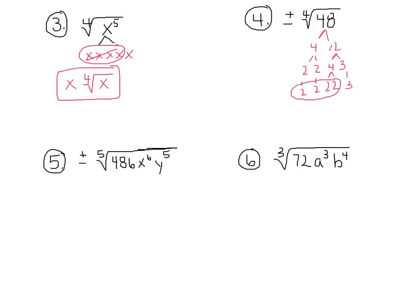So I have that. So that's going to come out. So I'm going to have plus or minus. This is going to come out as 2. And then I have the 4th root of 3. There's your answer.